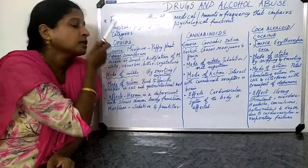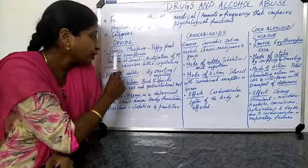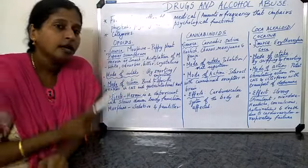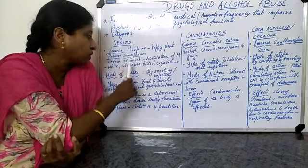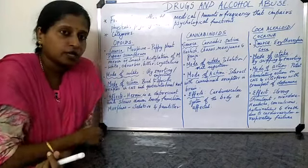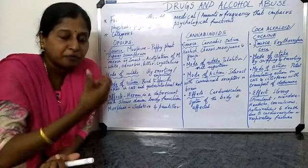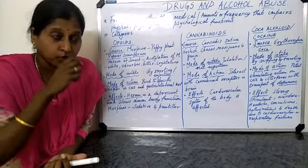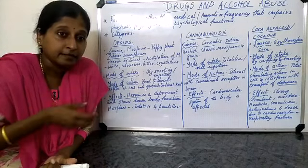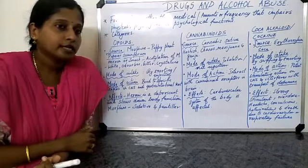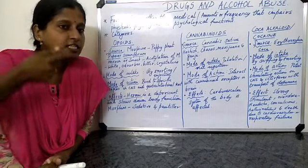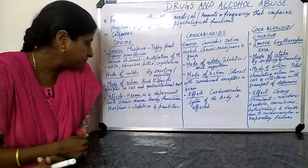So to summarize opioids: morphine comes from Papaver somniferum, and heroin or smack is obtained by acetylation of morphine. It is white, odorless, bitter, and crystalline. The mode of intake is by snorting — meaning inhaling it forcefully through the nose — or by injection.